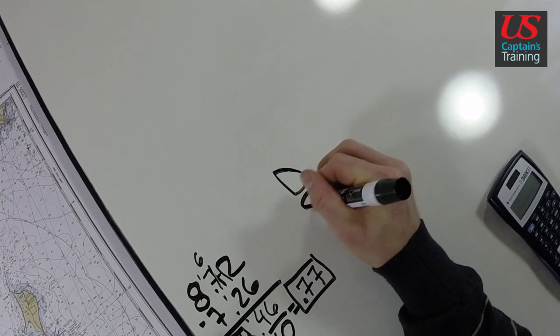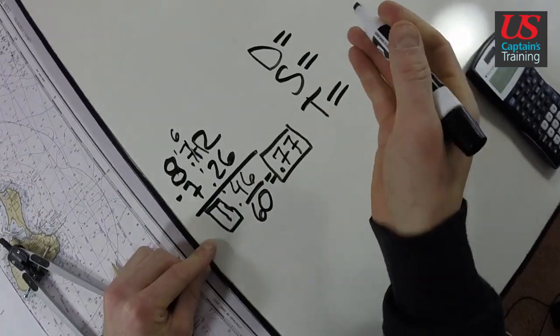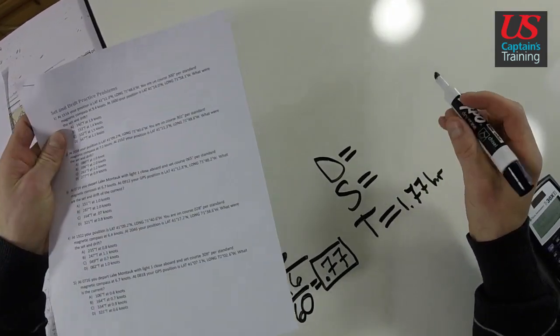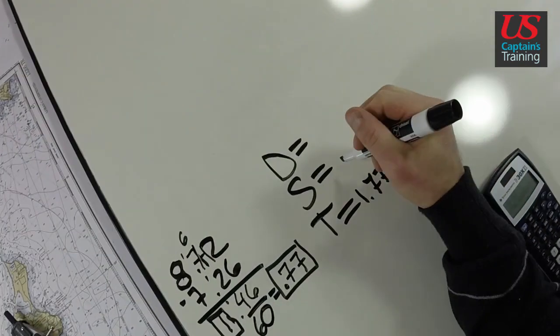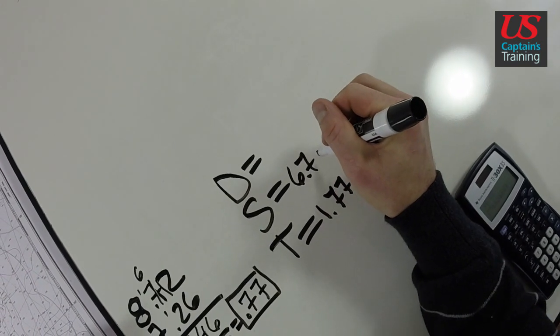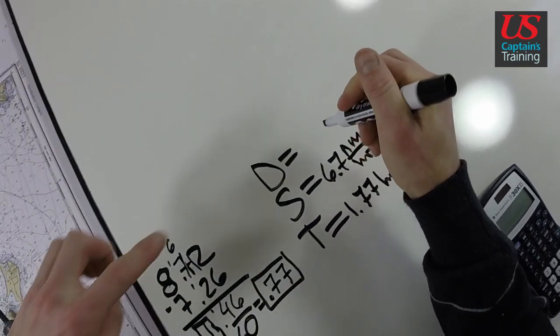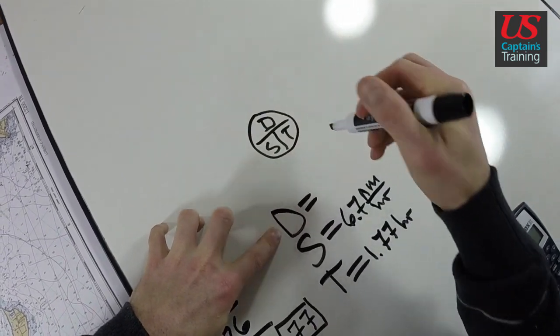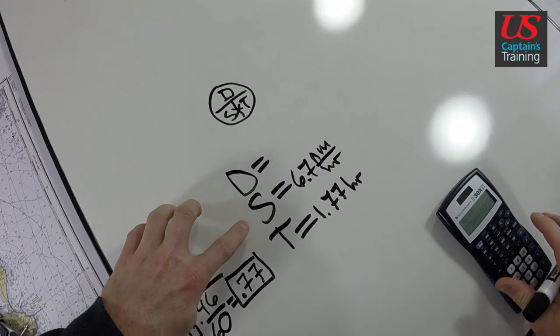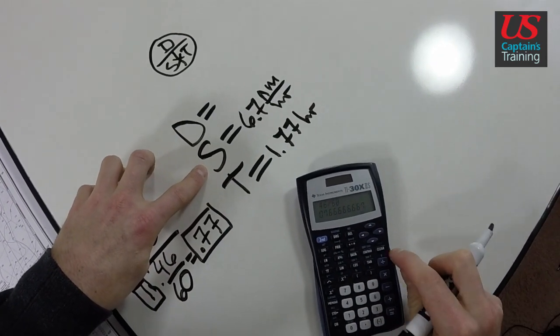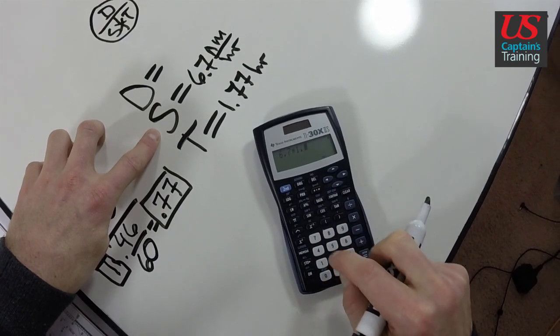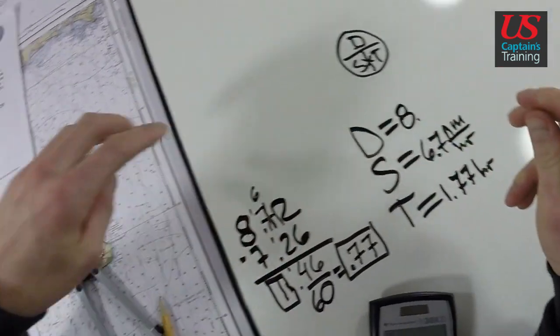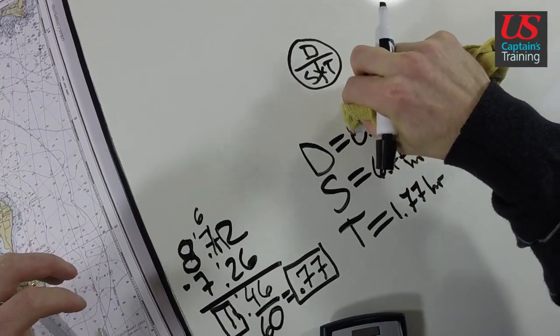Let's set up our D street now. Distance, speed, time. We need to know how far we go down our course. Our time was 1.77 hours and our speed is given in the problem, 6.7 knots. Here's our memory aid D street: distance is equal to speed times time. So 6.7 times 1.77 equals 11.86 nautical miles.